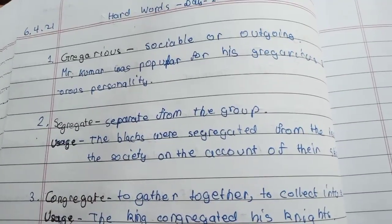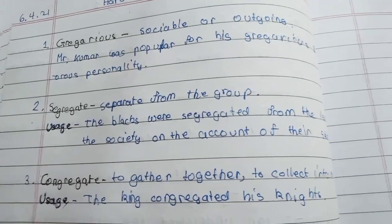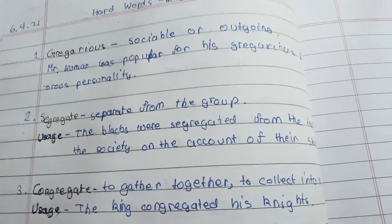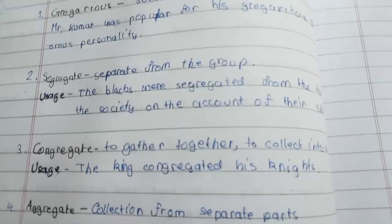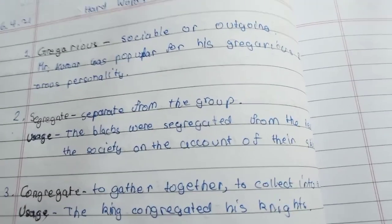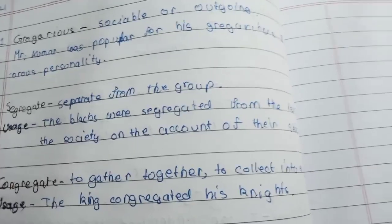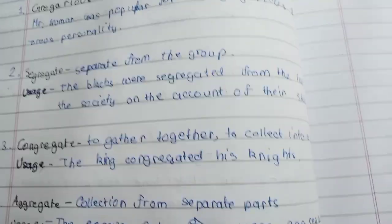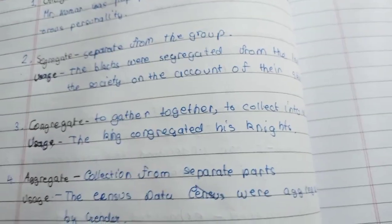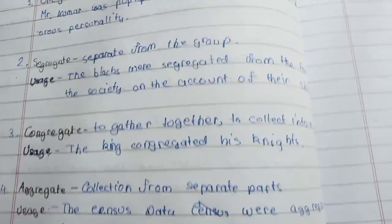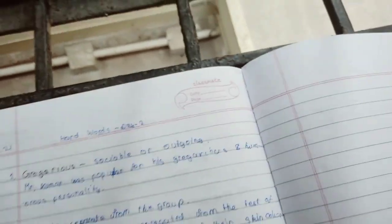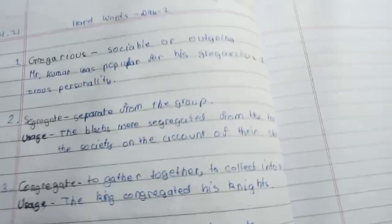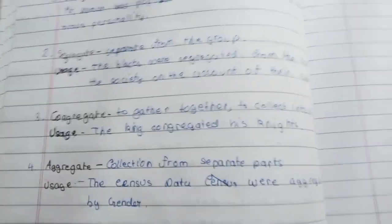The second word is segregate, which means to separate from the group. The example sentence can be compared to the political situation in South Africa in the early 1900s: 'The blacks were segregated from the rest of society on account of their skin color.'